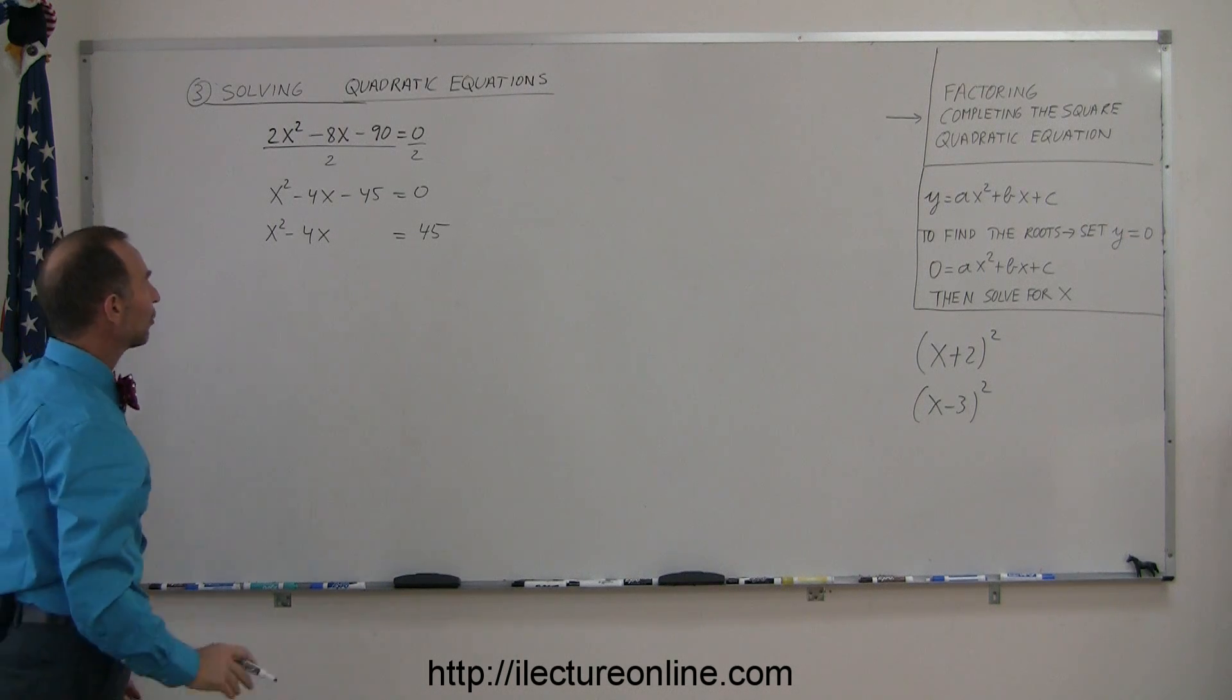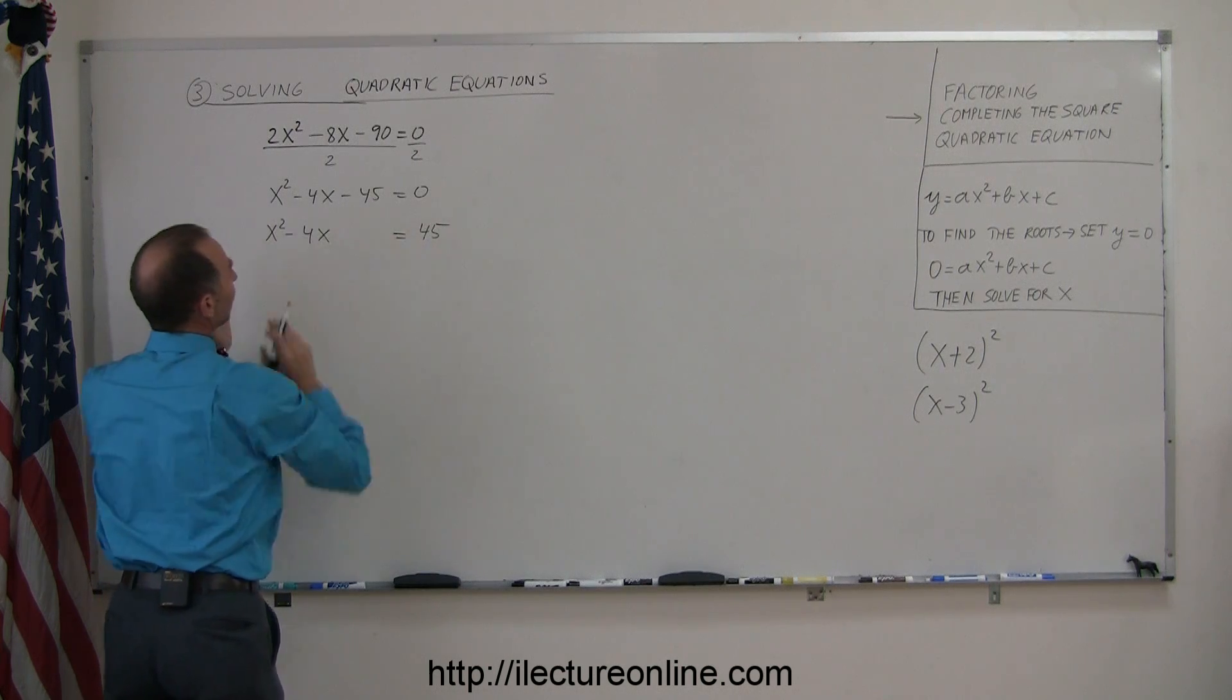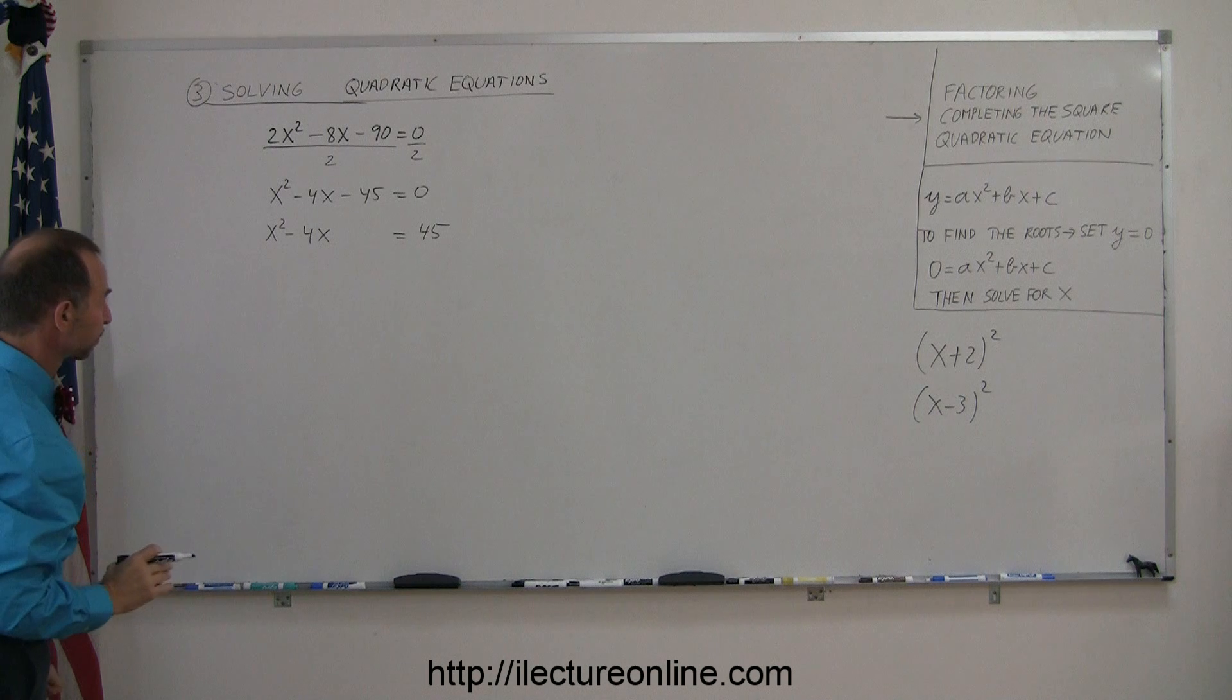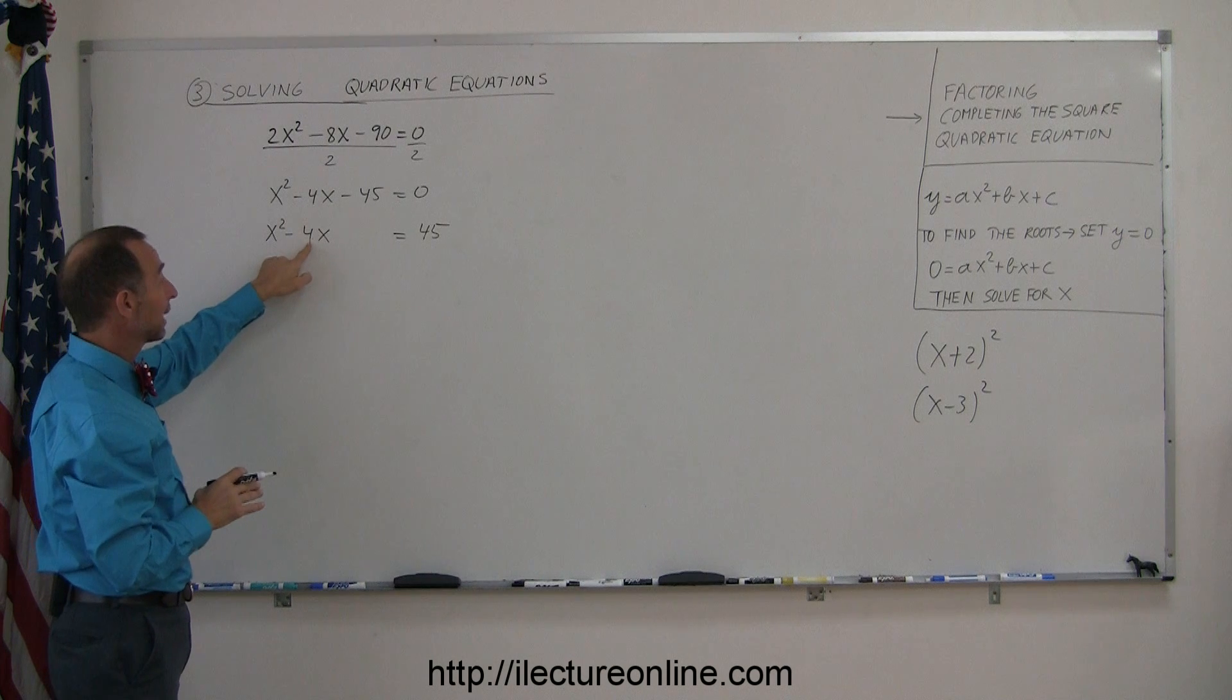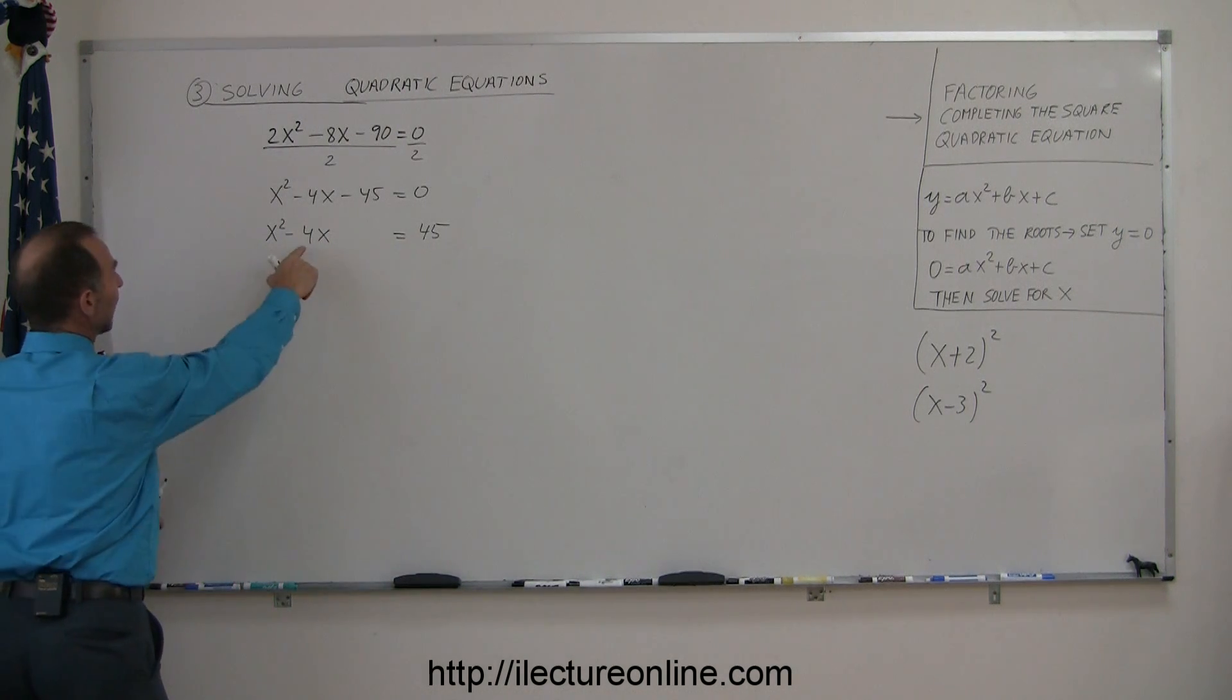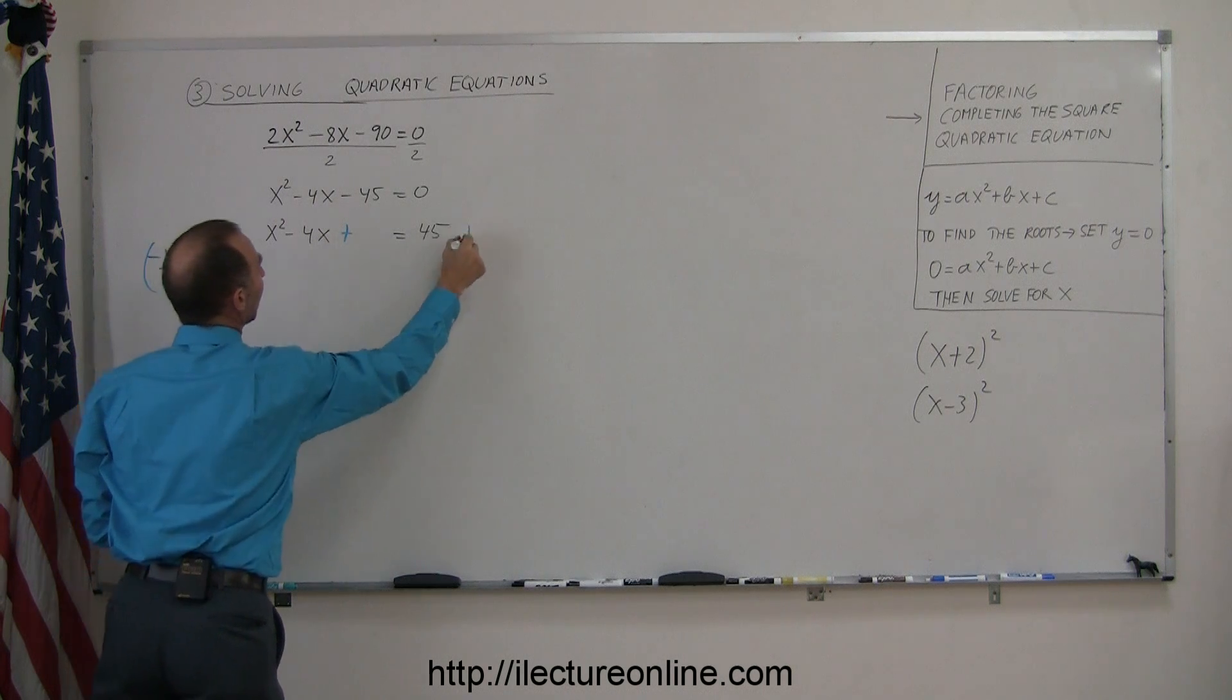The next step is to add some constant to both sides so this becomes a perfect square. To do that, we take this term right here, divide it by 2 and square it, and add it to both sides. We take the minus 4, divide it by 2, and square it, and add that to both sides of the equation.